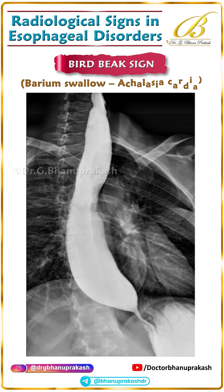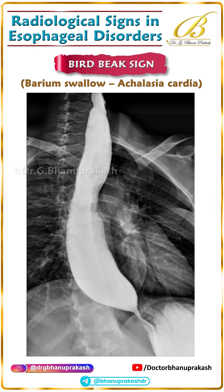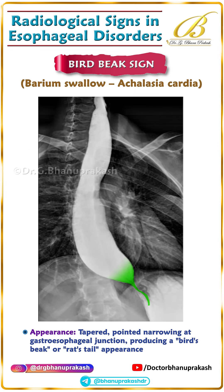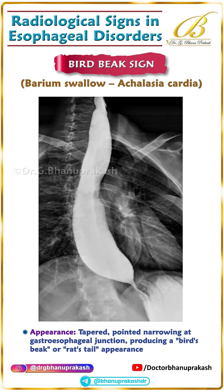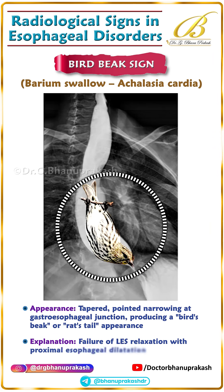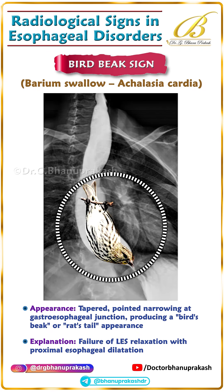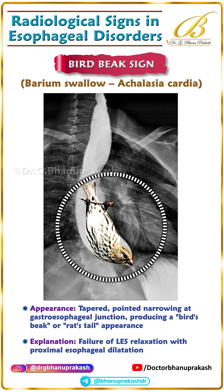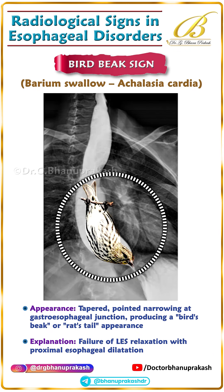First, the bird beak sign. This is seen in achalasia cardia. On a barium swallow, the distal esophagus shows a sharp tapering narrowing at the gastroesophageal junction, looking just like a bird's beak. This happens because the lower esophageal sphincter fails to relax, causing dilatation above.